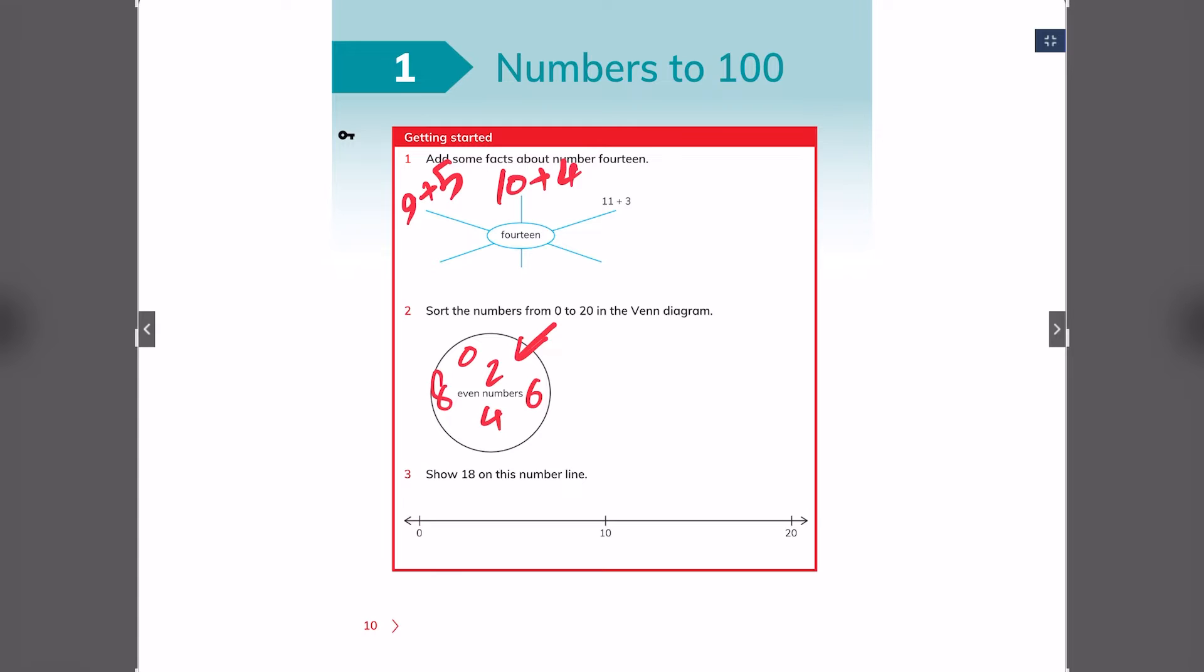Now we have a number line. It asks you to show number 18 on this number line. This is 0, this is 10 and this is 20. So you should know that number 18 is between number 10 and number 20. The middle part between 10 and 20 is actually 15. So now we know number 18 is not here too. Let's go to the end part, 16, 17, 18. 18 is here. So you should mark where the number 18 is on the number line.